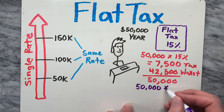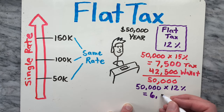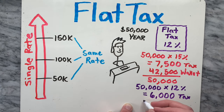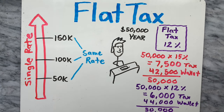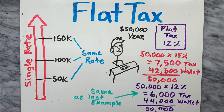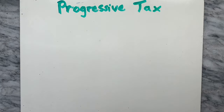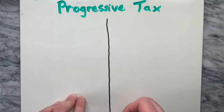In this system, Taylor gets to keep $42,500 of the $50,000 annually paid. If we were to set the flat tax at 12%, then this would equal $6,000 of taxes, equivalent to our last example with progressive taxes.